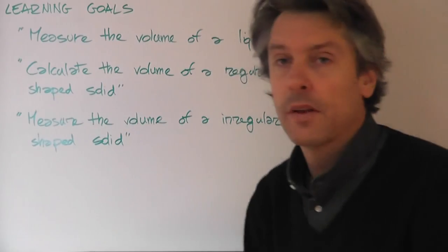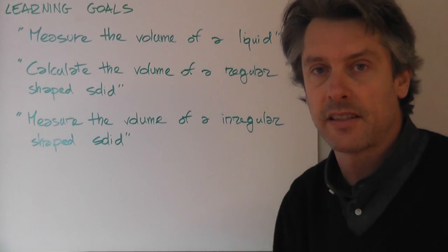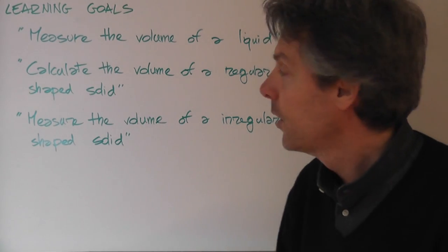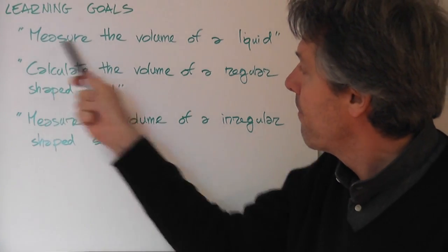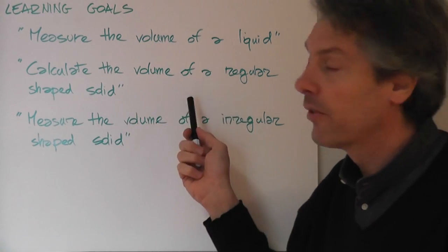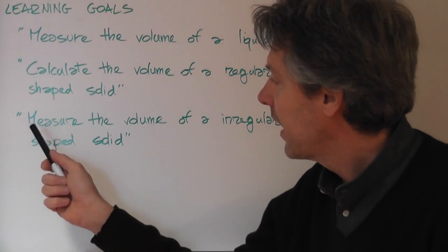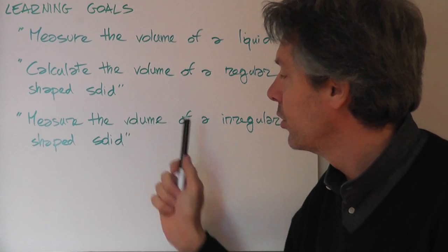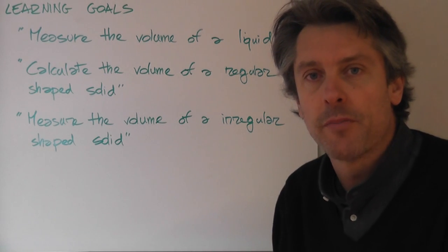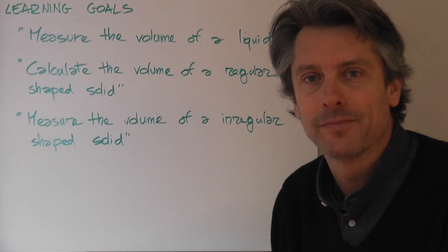So, the learning goals of this last lesson of measurement in units. It's very simple to see which they were. Measure the volume of a liquid. Calculate the volume of a regular shaped solid. And, finally, measure the volume of an irregular shaped solid. And, from Mr. Boscarini, that's all. Goodbye.